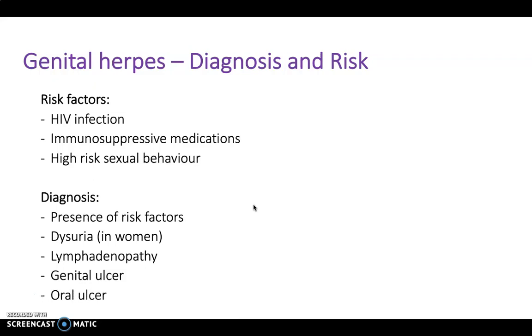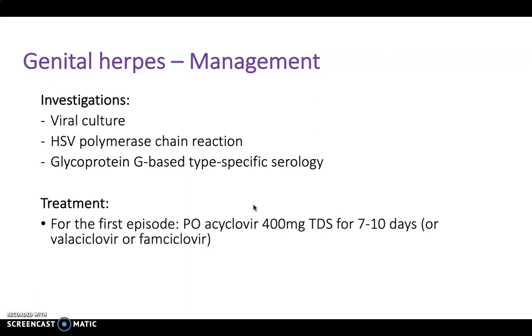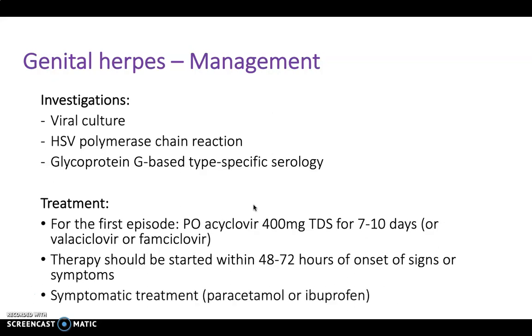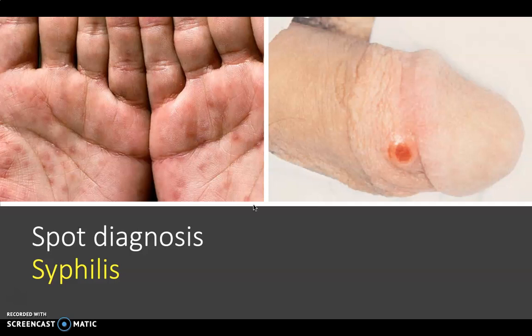The patient may have concomitant genital and oral ulcers. Investigations include viral cultures, HSV polymerase chain reaction, and glycoprotein G-based type-specific serology. Treatment for the first episode is oral acyclovir three times daily for seven to ten days, and should be started within 48 to 72 hours of onset of signs and symptoms for best outcome. Symptoms can also be managed with paracetamol or ibuprofen. Always consult the BNF and local trust guidance. Here we see a classic genital herpes rash, and also the rash of secondary syphilis and the genital ulcer of primary syphilis.